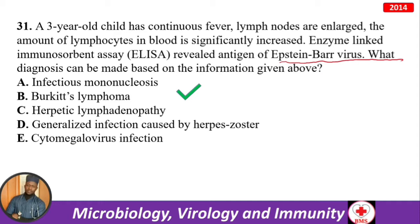With this EBV information you can answer many related questions. For example: if the patient undergoes a monospot test, what will be the result? Heterofile antibodies make the monospot test positive in infectious mononucleosis — so the answer is monospot positive.